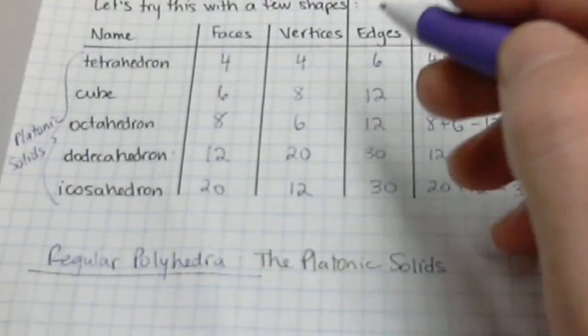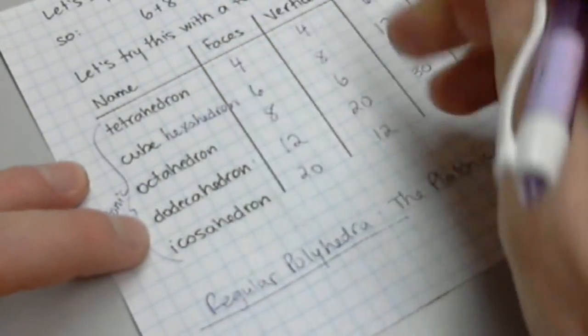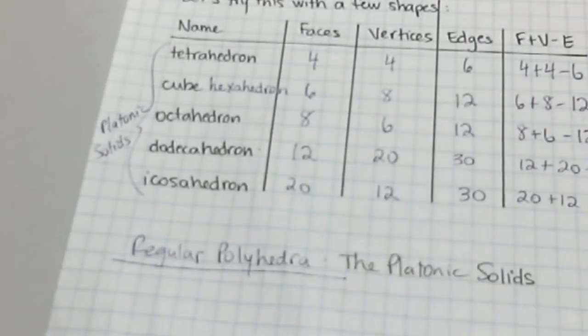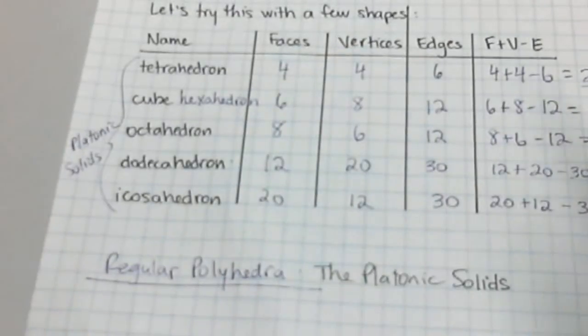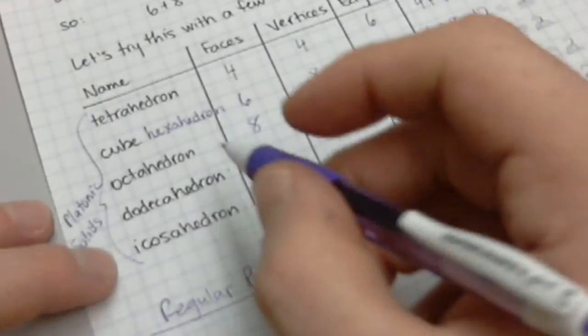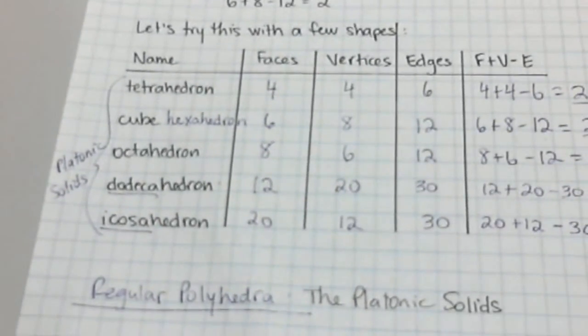Now dodecahedrons have 12 faces, and then icosahedrons have 20 faces. And then all past the dodeca and then the icosa have to do with prefixes as well. So that's kind of a couple of things about how faces, vertices, and edges are related, and then into 8.7, which is platonic solids.